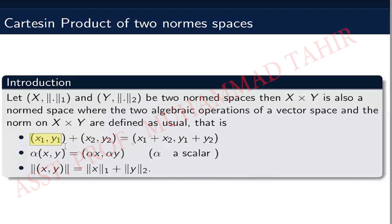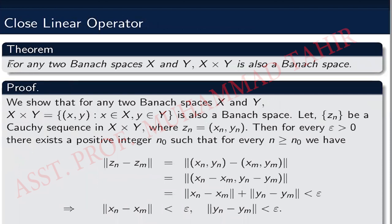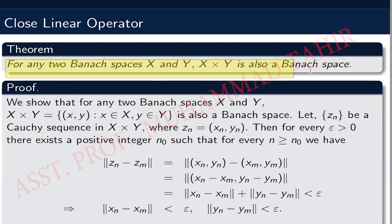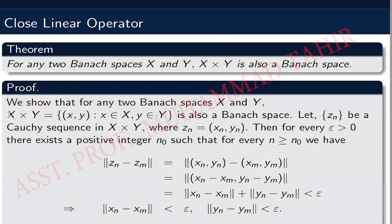Under these operations, one can easily prove that X cross Y is a normed space. We have a result: for any two Banach spaces X and Y, the normed space X cross Y is also a Banach space. If X and Y are two complete normed spaces, then the Cartesian product X cross Y is also a complete normed space.